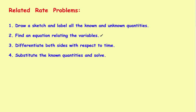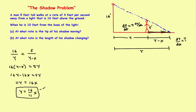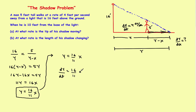Now we want to know how these things are changing, so step 3: differentiate both sides with respect to time. We have y = (16/11)x. This is actually the tricky part of the shadow problem — finding the relationship was the hard work. The actual math is pretty easy now. Differentiating implicitly with respect to time gives dy/dt = (16/11) · (dx/dt). That takes care of step 3.